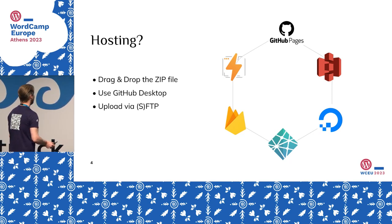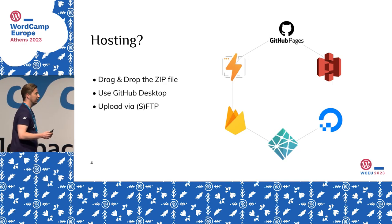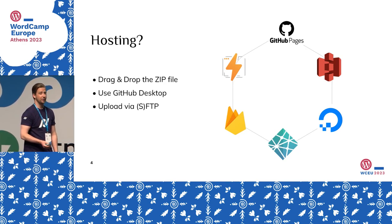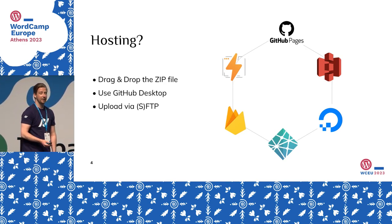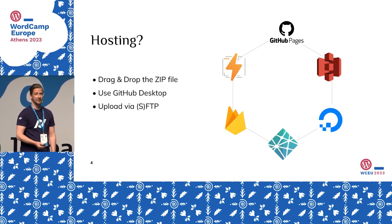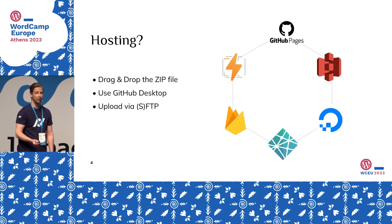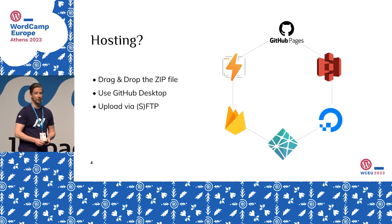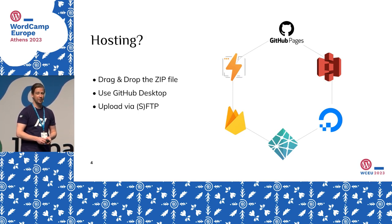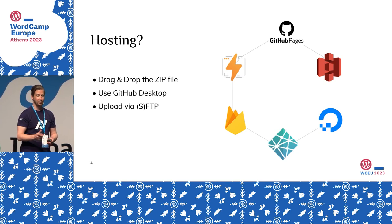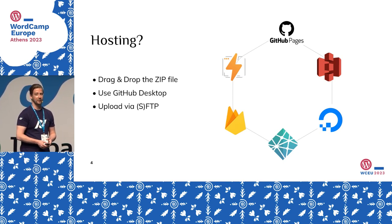If you aren't familiar with GitHub and you're looking for the quickest way to get started, I would suggest starting with Netlify. Netlify provides a little drag-and-drop zip uploader where you can simply drag and drop the zip file you got from Simply Static, upload it to Netlify, and you immediately get your static website running on a temporary domain. You can always switch to your preferred domain later.